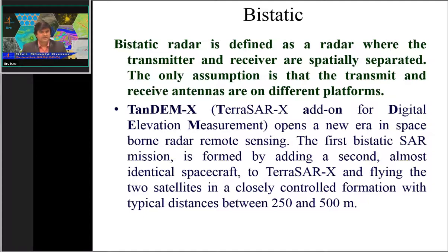In bistatic mode, one satellite transmits electromagnetic pulses and the other works as receiver. For example, TerraSAR-X transmits electromagnetic pulses while TanDEM-X — the TerraSAR-X add-on for digital elevation measurement — receives the scattered electromagnetic waves. In this case, TerraSAR-X's receiving mode may be off while TanDEM-X's transmission mode is completely closed, so only its receiving mode is active.